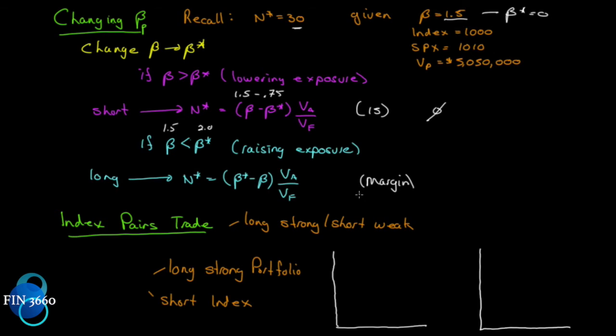Let's look at an index pairs trade. Now, a pairs trade means that you've selected two assets. One that you feel is very strong, one that you feel is very weak, and rather than making a directional bet on either one of them, you're going to make a bet on the spread between them that they will spread out. So, you'll long the strong asset and you will short the weak asset.